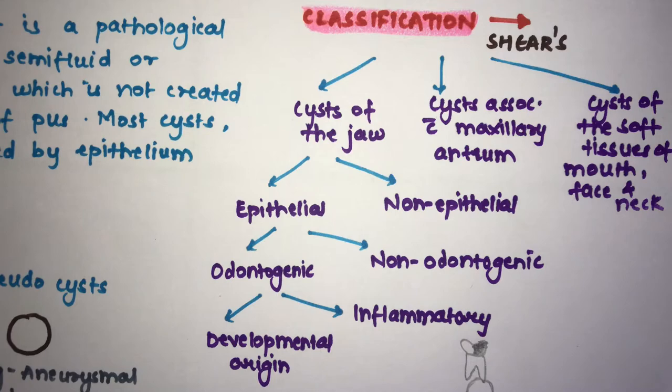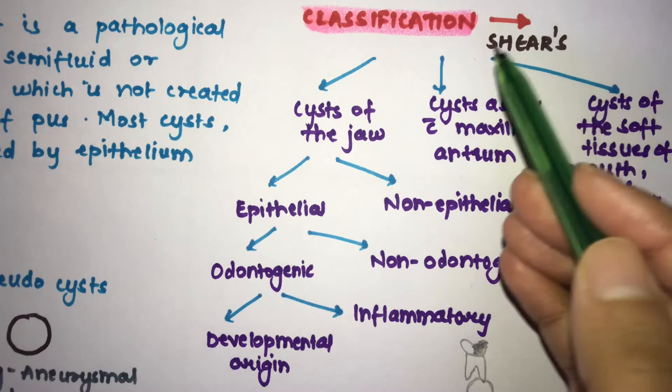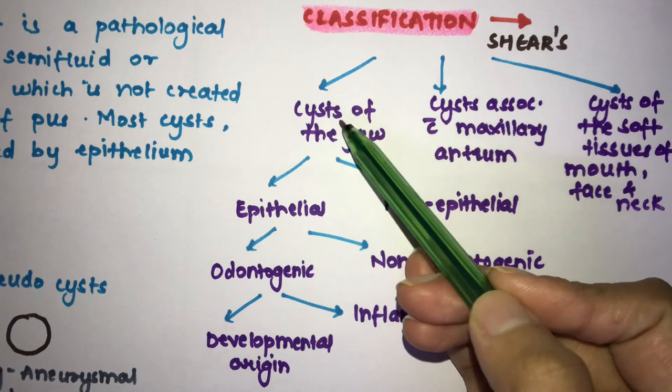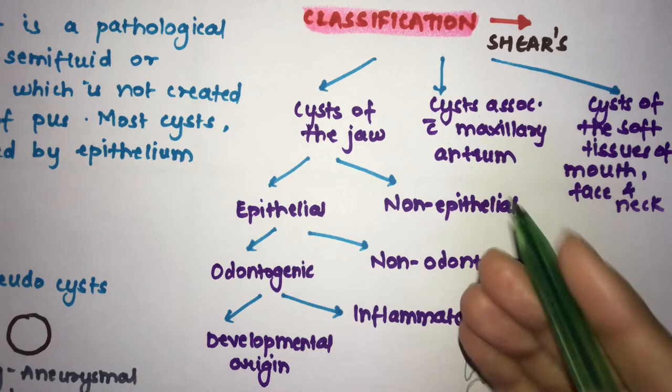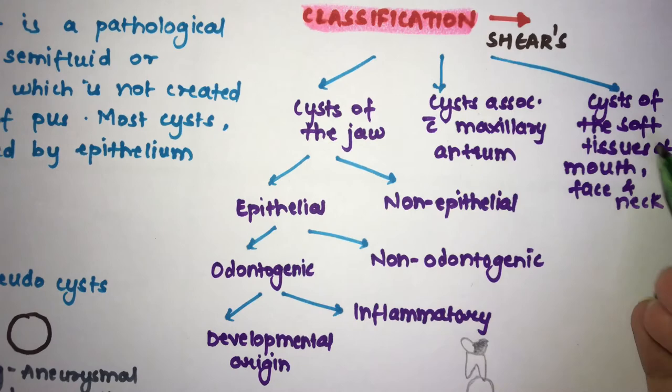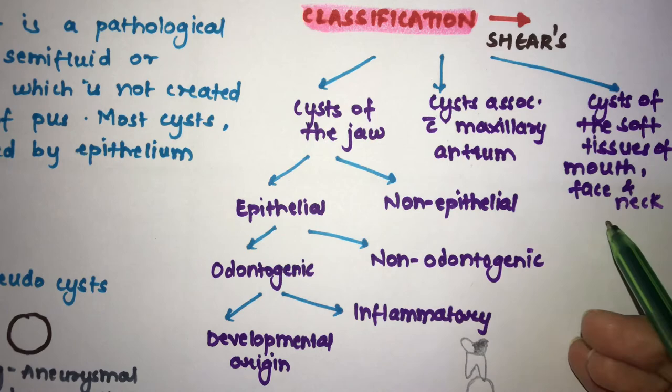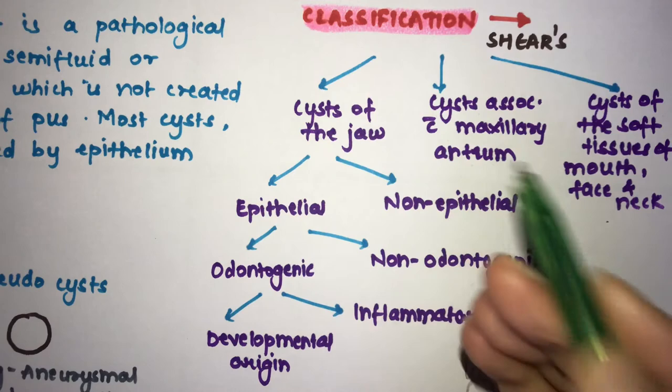There are various classifications for cysts, but the most commonly used one was given by Shear. In Shear's classification, cysts are divided into three types: cysts of the jaw, cysts associated with the maxillary antrum, and cysts of the soft tissues of the mouth, face, and neck. We are going to focus more on the cysts of the jaw.